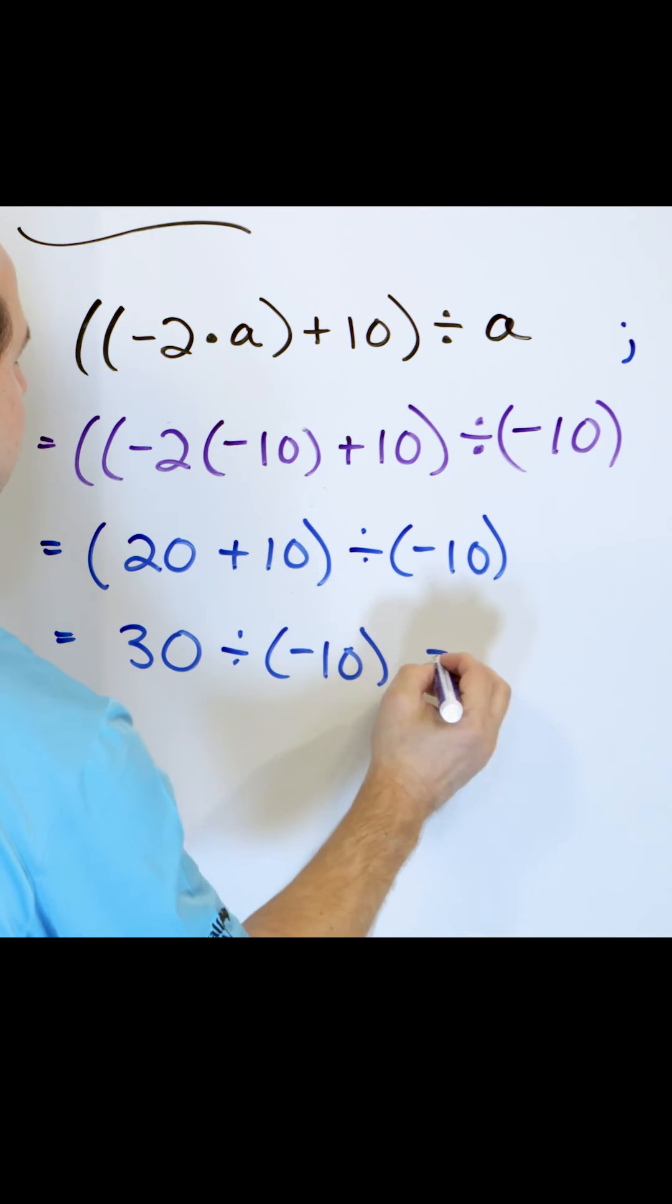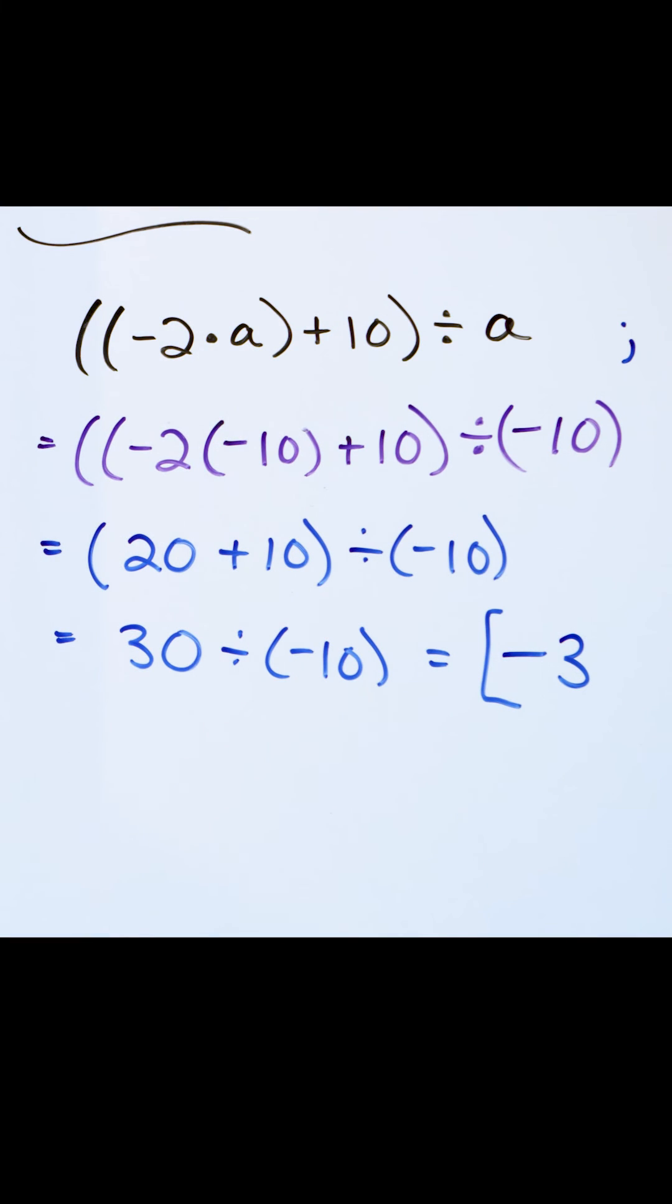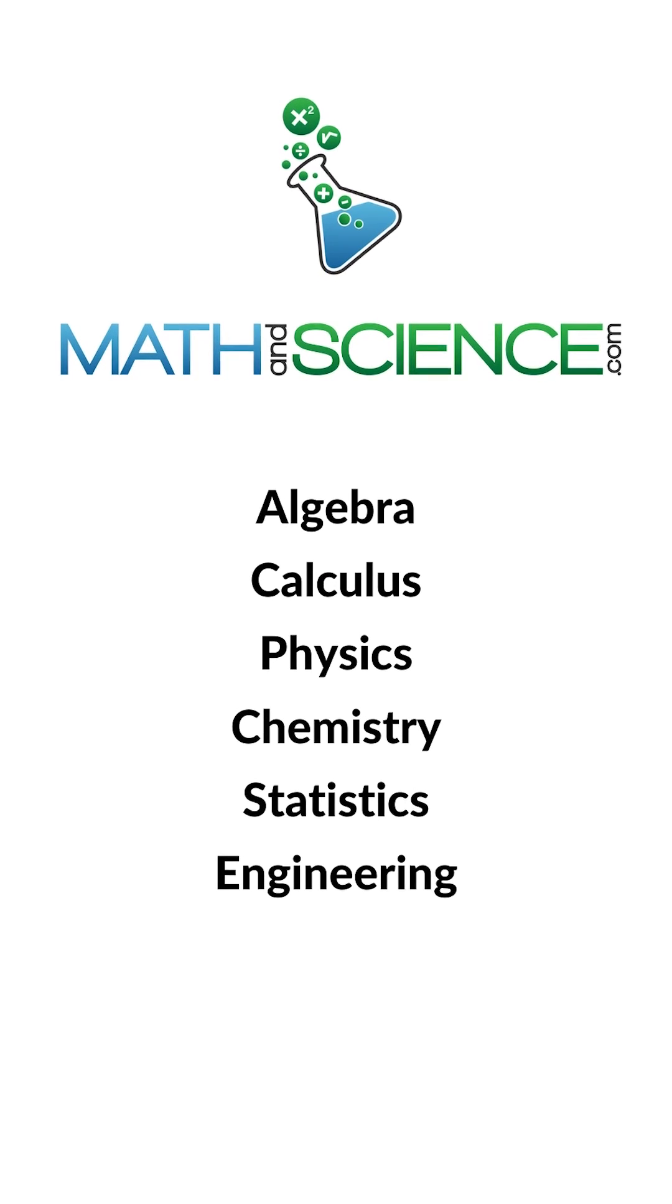Right now, positive divided by negative is a negative number always. 30 divided by 10 is 3, and so the answer is negative 3. That's the final answer. Learn anything at mathandscience.com.